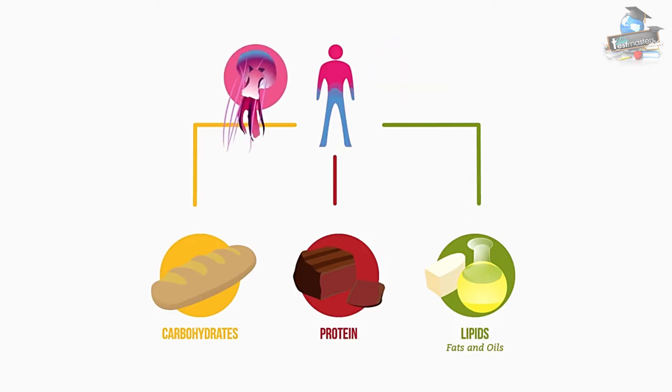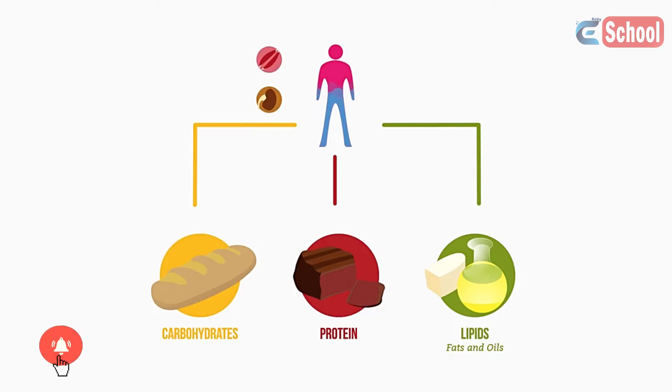And in some organisms, this can be up to 90%. Your muscles and kidneys are particularly watery at about 79%, but even your bones are made up of 31% water. Bet you didn't expect that.